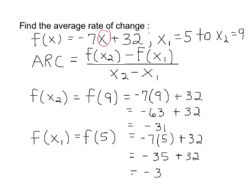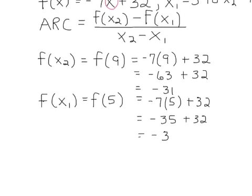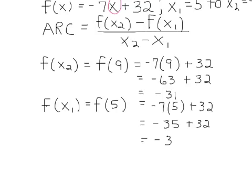Let's see what we have. Putting this together into the average rate of change problem. Average rate of change equals f of x sub 2, which we just figured out was -31, minus f of x sub 1, which we just figured out was -3, and I'm being careful because I have a minus and a negative.